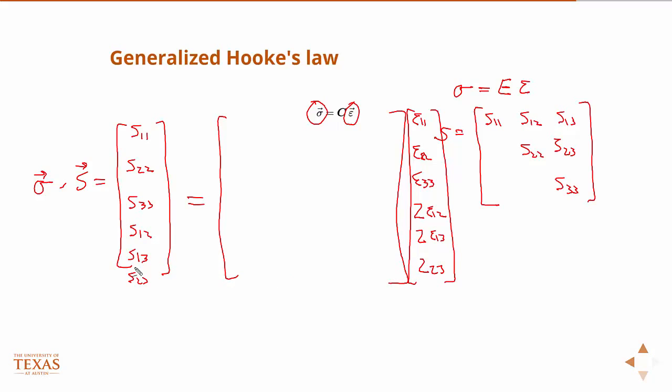In order for this equation to be valid, what is the shape of C, then? It's a 6 by 6. So how many components? 36.